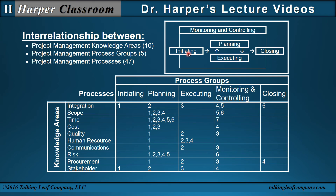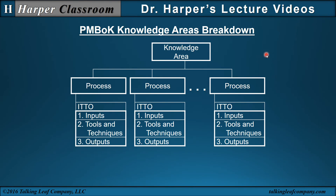Here are the ten knowledge areas and the processes as they are grouped within the process groups. We have initiating processes, planning, executing, and closing. The monitoring and controlling really runs from the beginning to the end. In PMBOK, the knowledge areas are broken down into different processes, and in turn they're broken down into the inputs, tools, techniques, and outputs — the ITTOs.